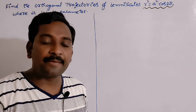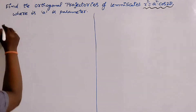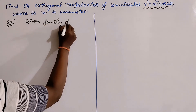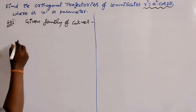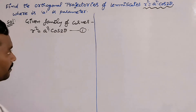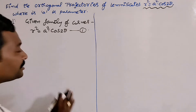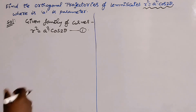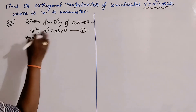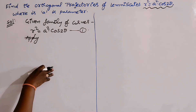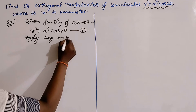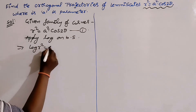We should eliminate the parameter 'a' by taking the derivative with respect to θ. However, don't take the derivative with respect to θ blindly. Whenever the given family is in polar coordinates, it is better to apply log on both sides first. If you apply log on both sides, then you can take the derivative with respect to θ and easily eliminate the parameter.